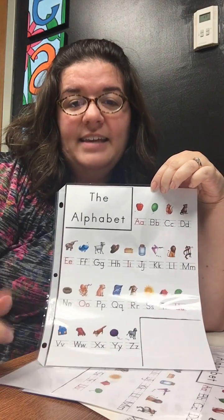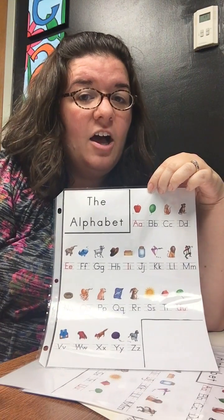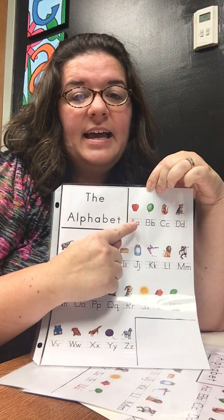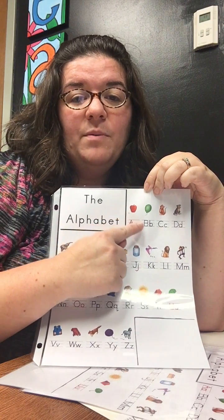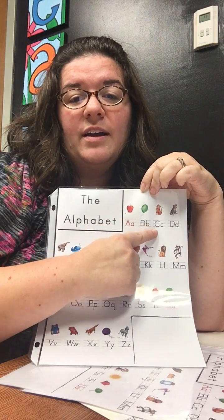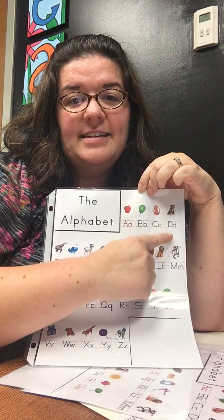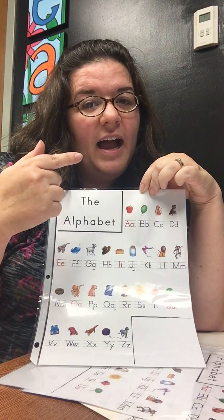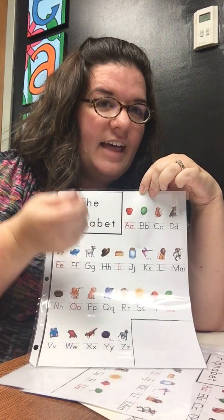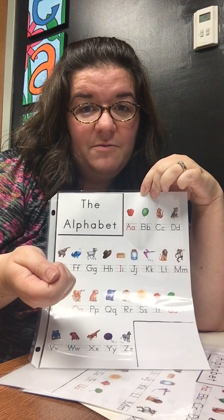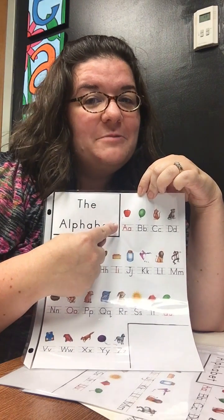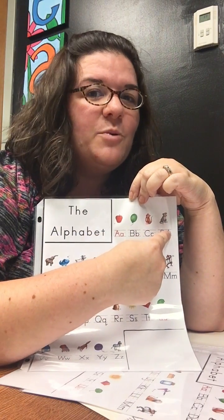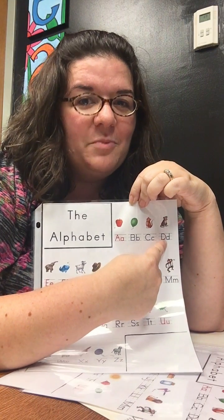Then we're going to practice saying the letters or the sounds along with their picture. As we go across, we practice either 'A, A, apple' or 'B, B, ball' or 'C, C, cat, D, D, dog.' They have a picture, and they've got an extra thing in their mind to hook that letter's value to. And as we practice them this way, you'll notice we're starting from the left and moving to the right — so we're practicing tracking print.